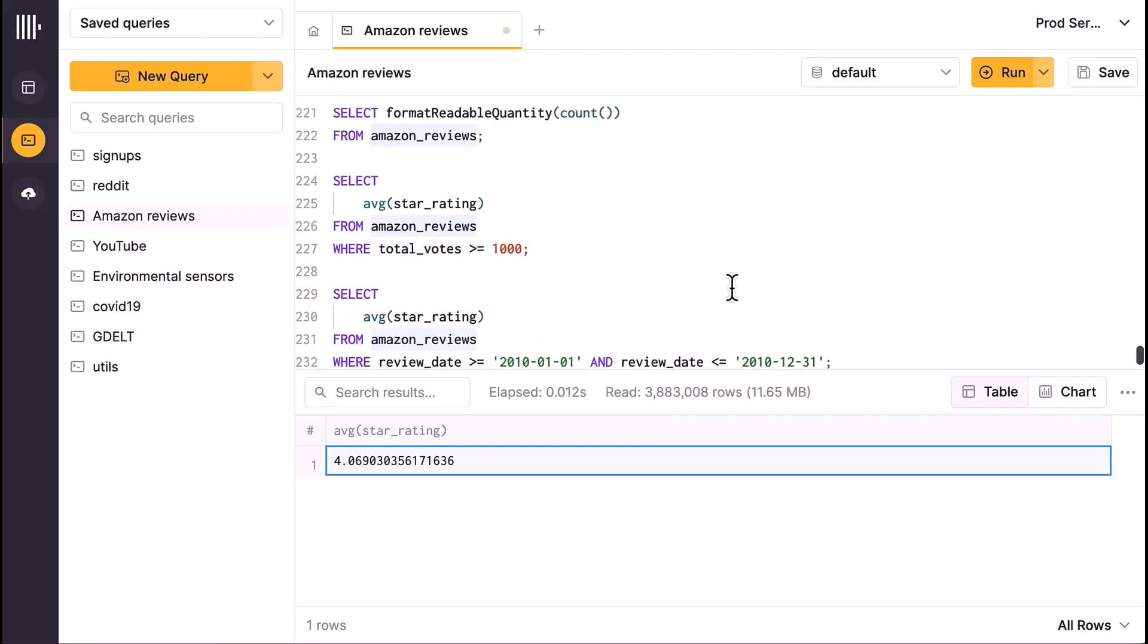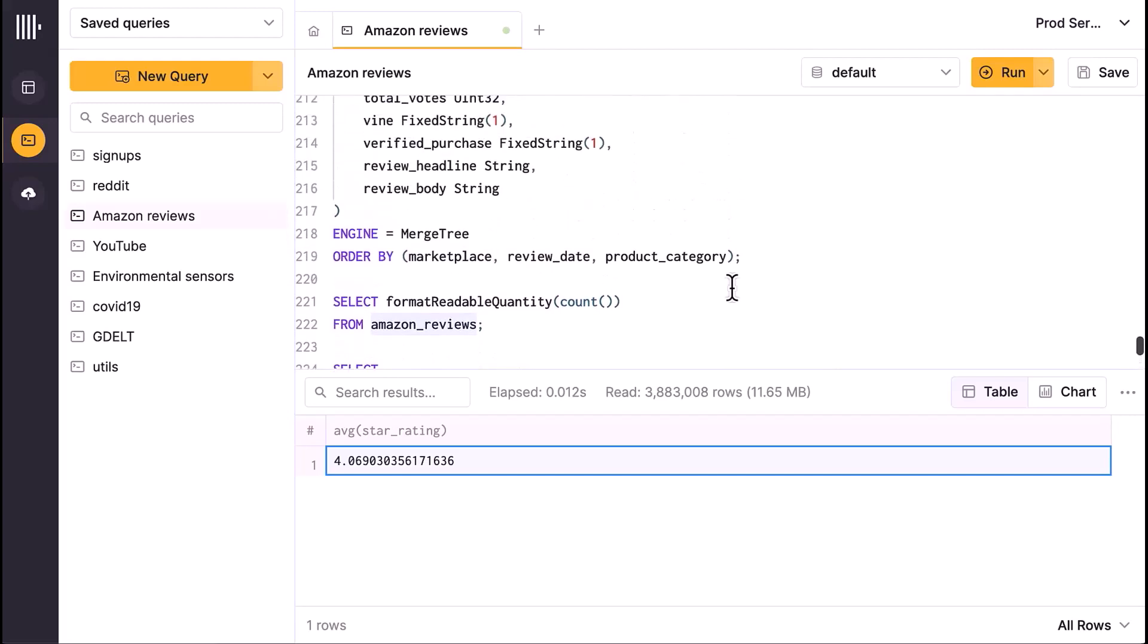So your goal is to pick a good primary key. A good primary key contains the columns that you query by or filter on in your WHERE clauses in your queries.